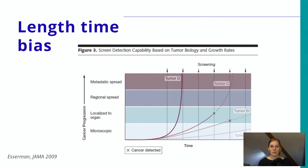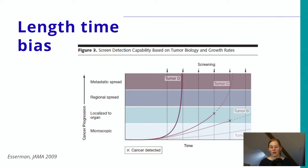With cancer, there are always tumors which tend to grow very slowly, have a low chance of mortality, and take a long time to develop. But there are also more aggressive tumors which develop really quickly and are much more likely to result in mortality.